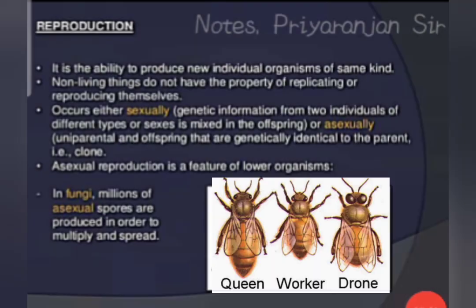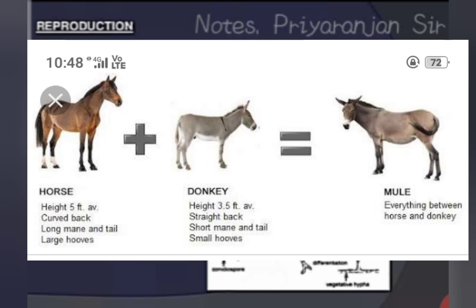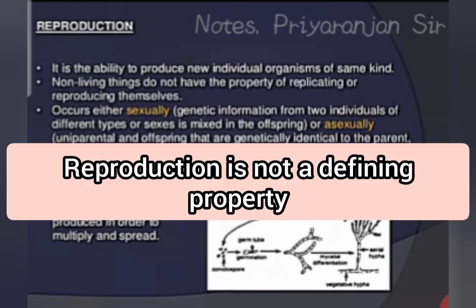Honey bees are of three types: queen, worker, and drone. Workers are sterile — they are living organisms but unable to reproduce. Another example is the mule. The mule is produced when the sperm of a donkey artificially fertilizes the ovum of a horse. The resulting offspring is called a mule. Mules are sterile but are living organisms.